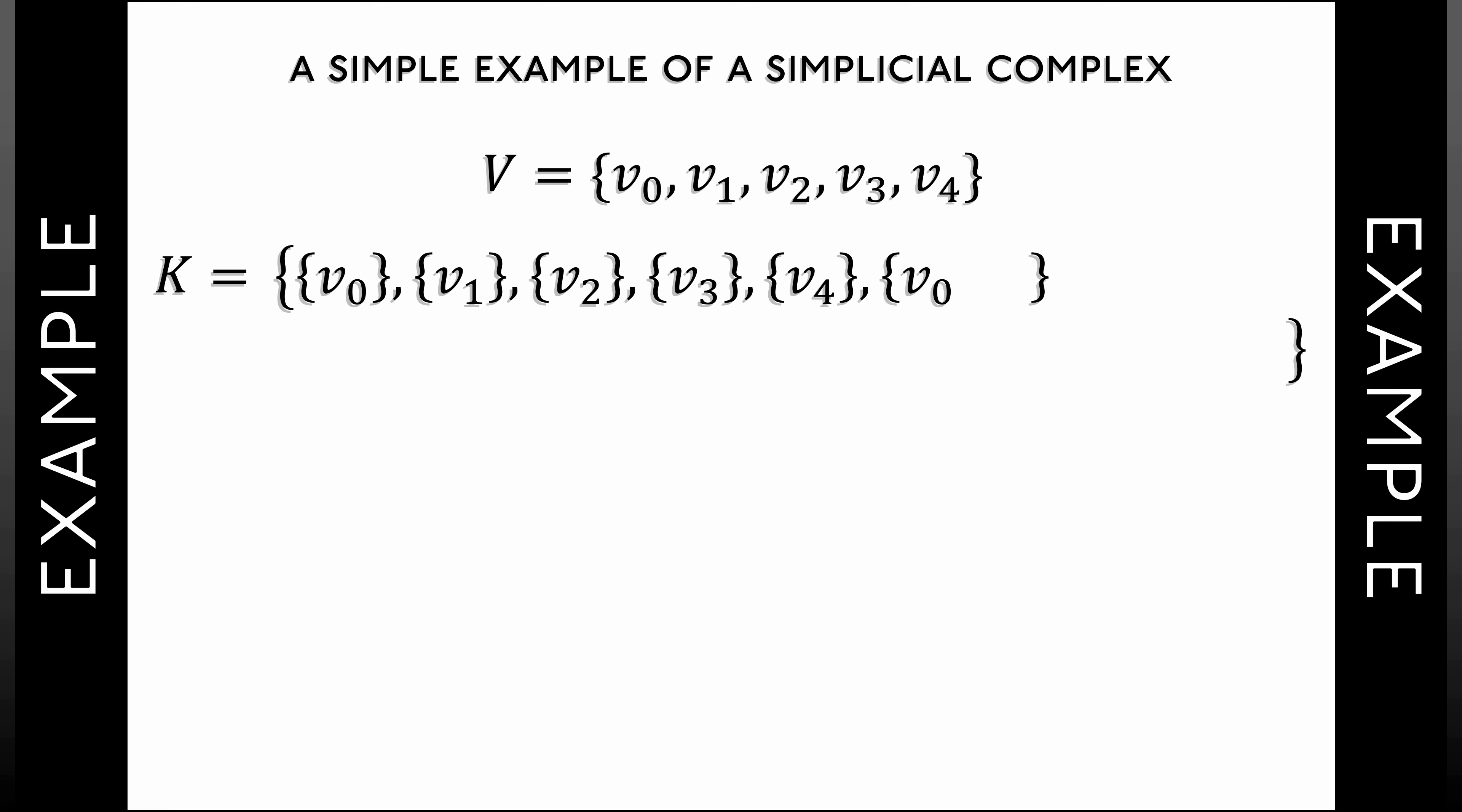It is, at this point, very worthwhile to see a simple example of a simplicial complex. Let's consider a vertex set V that has five vertices: V0, V1, V2, V3, V4. Our simplicial complex K is going to be the following collection of simplices, of subsets of V. Notice that this contains all five vertices, as it should, and then it has some pairs, and then, at the very end, one triple, a two-simplex given by V1, V2, V3.